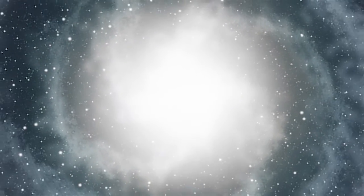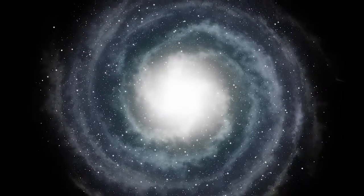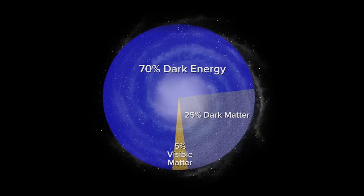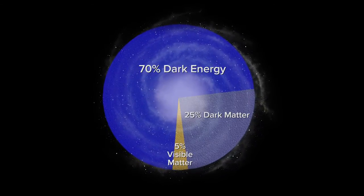Dark energy is a sort of mysterious thing that is causing the universe's expansion to accelerate. Dark matter, on the other hand, is a new type of matter that we are certain is out there. So one of the great mysteries is what is this stuff? Where does it come from?